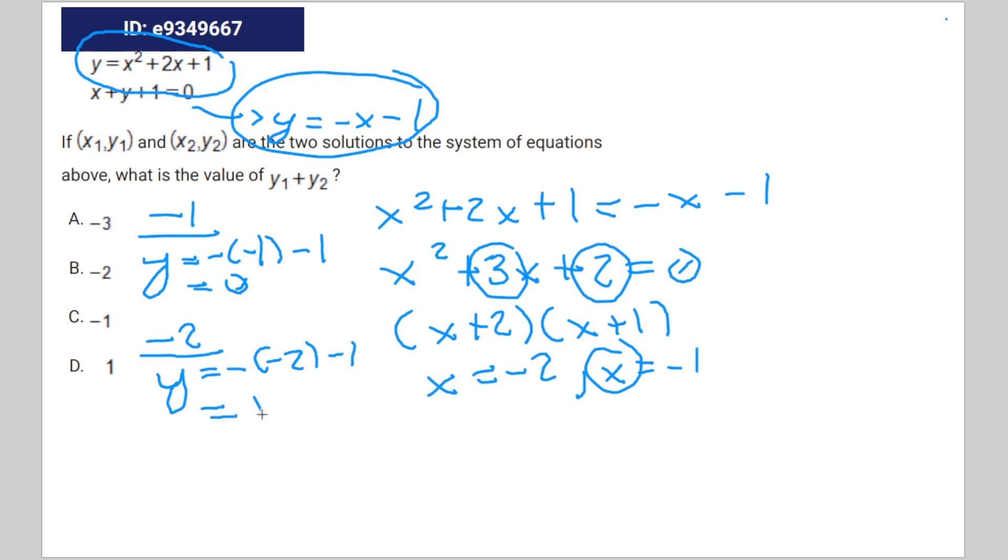Which equals 1. We're looking for y₁ + y₂, so that's going to be 0 + 1, and 0 + 1 equals 1. Therefore, the correct answer is D: 1.